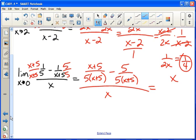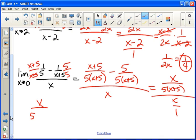We have a fraction over a fraction. So we multiply by the reciprocal. Canceling out the x's, leaving you with one over five times x plus five. Plug in zero and you get one twenty-fifth.